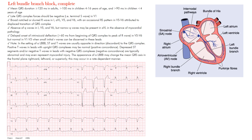Let's get started with left bundle branch block and what is actually going on. Understanding the underlying physiology helps you understand why you see what you see on the EKG. Reviewing the conduction system: you have the sinus node at the top, then the AV node, then the His bundle, which splits into the right bundle branch going to the right ventricle and the left bundle branch, which has a left anterior and left posterior fascicle.